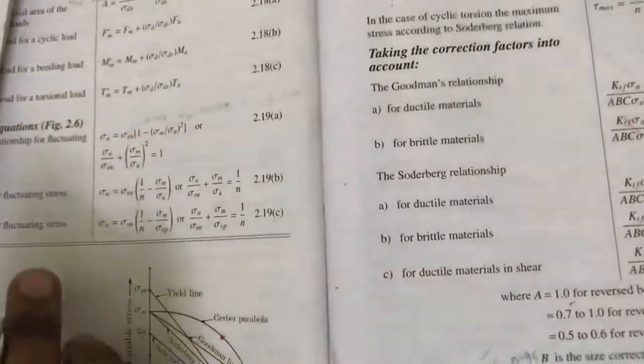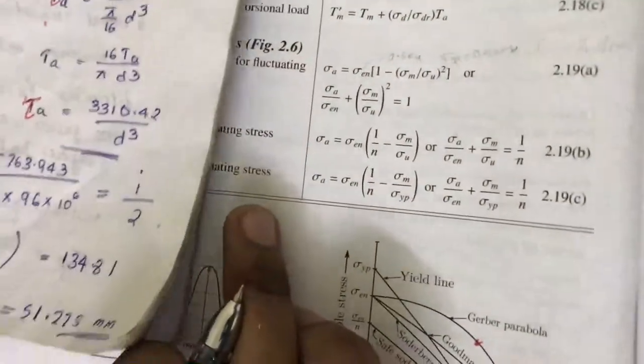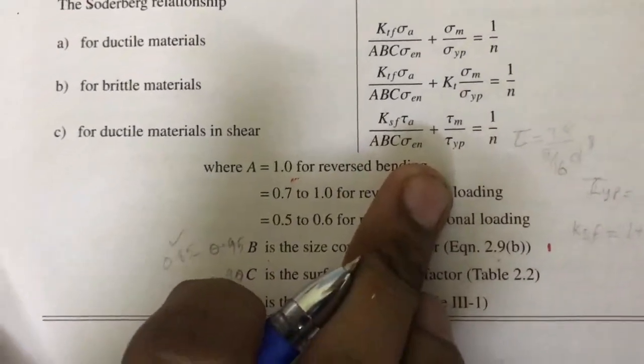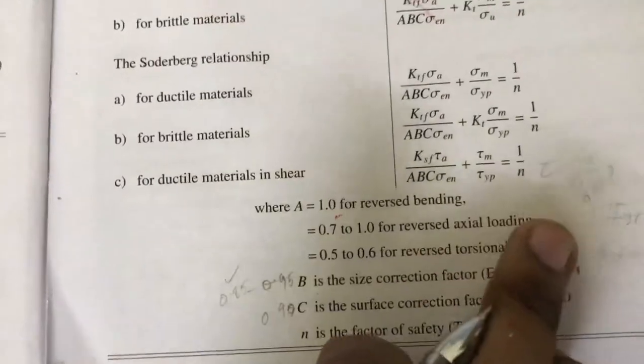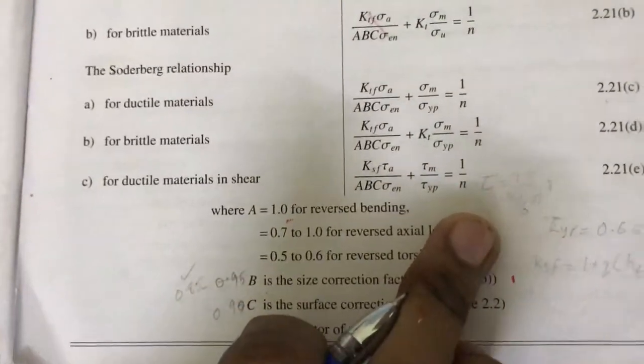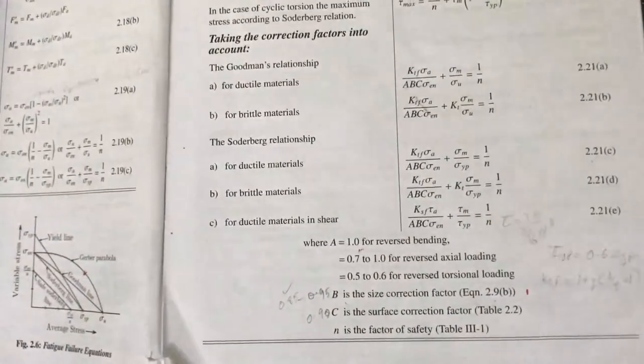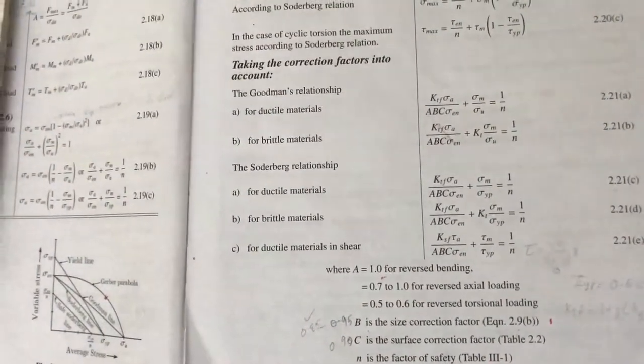Anyway, here it is directly given, sigma en is directly given, endurance limit is directly given and tau yp, yield stress, that is also directly given. So we can substitute here with factor of safety from which we can find d. A, B, C, R, if it is not given, a is equal to 0.5, B is equal to 0.9.